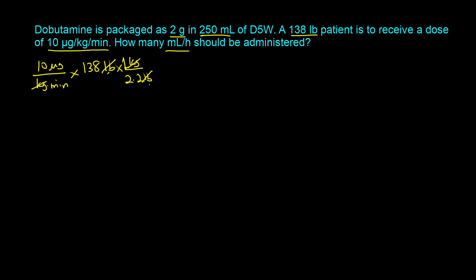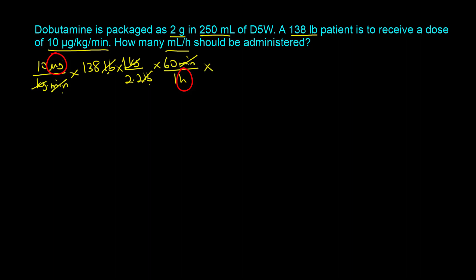As it stands now, we are in micrograms per minute, but we want to end up in milliliters per hour. So we convert the time unit: 60 minutes makes one hour. Now the minutes cancel out and we are in micrograms per hour. We still need a volume term in the numerator, and that's where the 250 milliliters becomes pertinent.